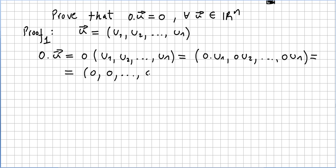Each component 0 times u_i equals 0, so by definition this is vector 0. Therefore 0 times vector u equals the zero vector, and this concludes the proof.